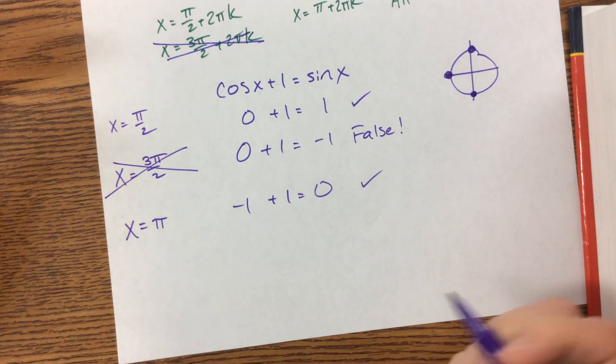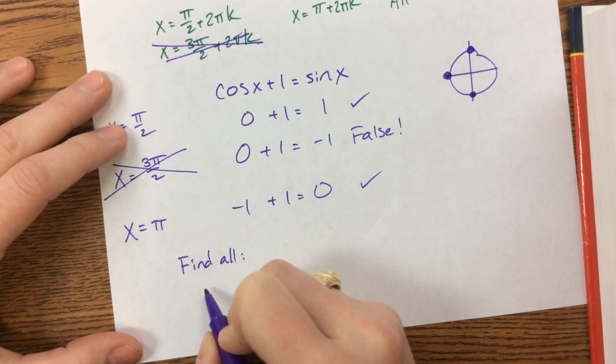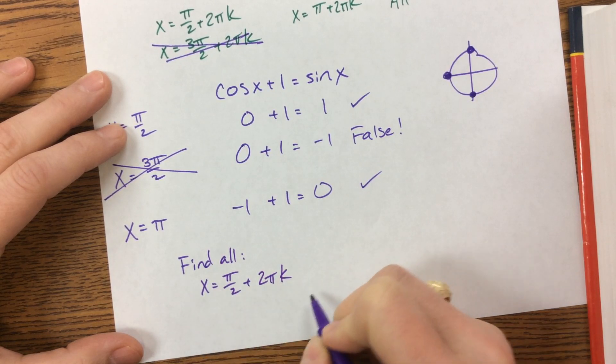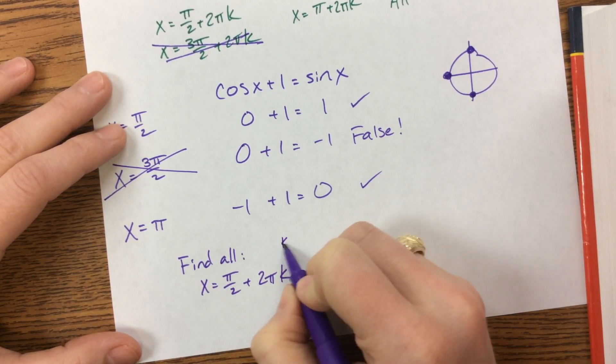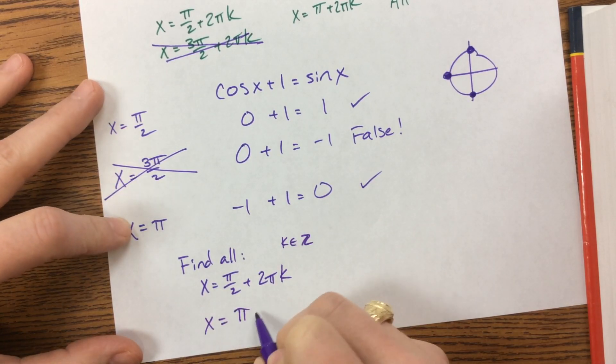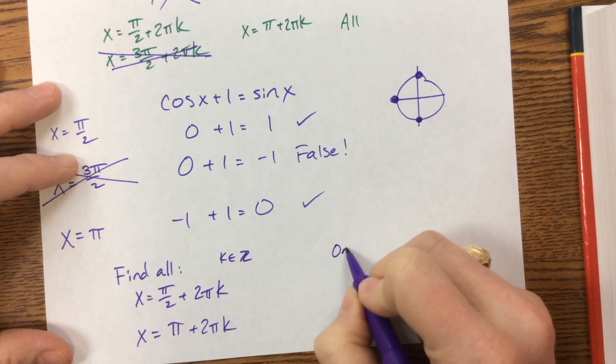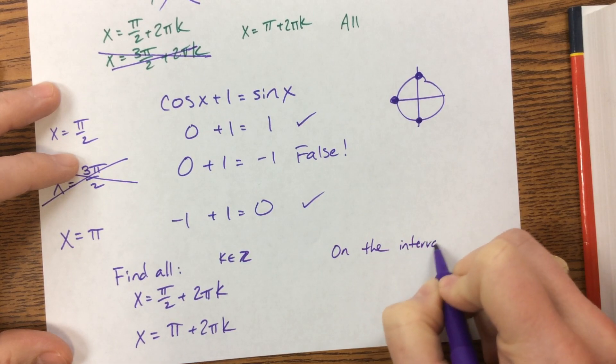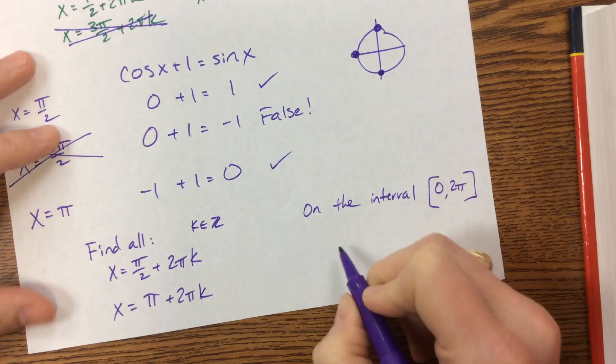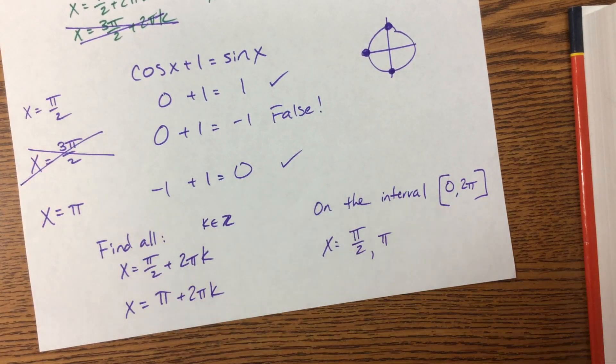So depending on how they ask you to answer this question, if they had said find all, you would have said x equals pi over 2 plus 2 pi k. Obviously k is an element of the integers, so we like to say kes. Or, and then we'd have had x equals pi plus 2 pi k. So that's how we would answer the question when they say find all. If they say on the interval, often we'll see 0 to 2 pi. We might see something else, but that's good enough for our purposes now. x equals pi over 2 or x equals pi.